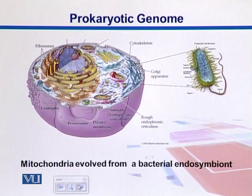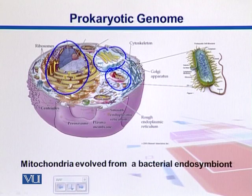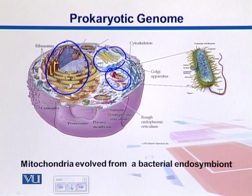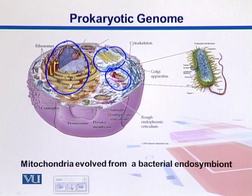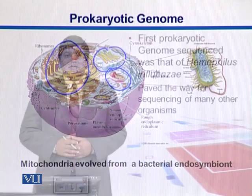Here we see a comparison between a eukaryotic cell and a prokaryotic cell. In eukaryotes we have all those membrane-bound organelles, one of them being mitochondria, which is involved with the respiration process in which food is broken down into energy. There is a hypothesis that mitochondria actually evolved from a bacteria, called the endosymbiont hypothesis. Eukaryotic cells are also complex and bigger than prokaryotes.